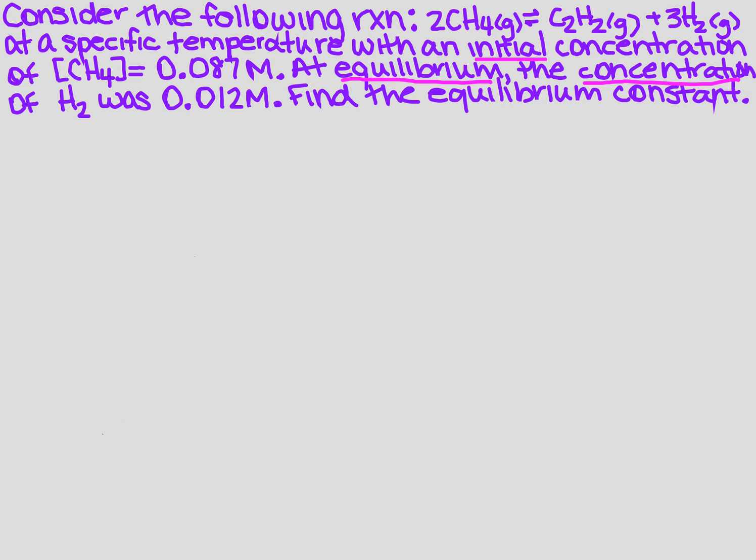So we notice it's got the words initial and equilibrium, so that tells me that right off the bat I'm going to have to use the RICE method. So I need to first write down the reaction. I'm going to rewrite the reaction first, so I've got 2CH4 gas, and that's going to go to C2H2 gas plus 3H2 gas.